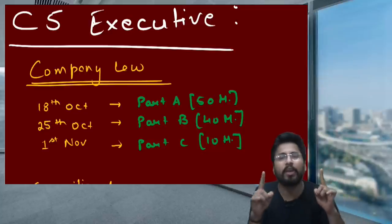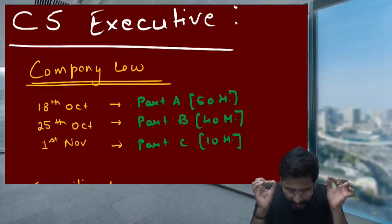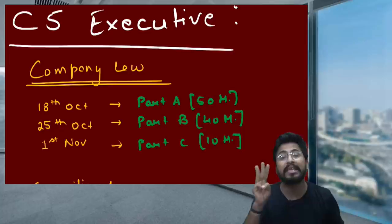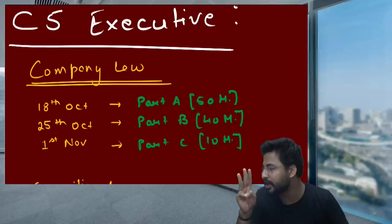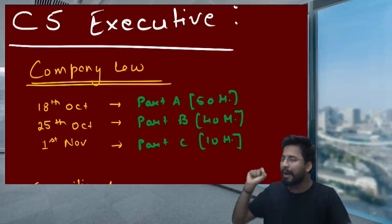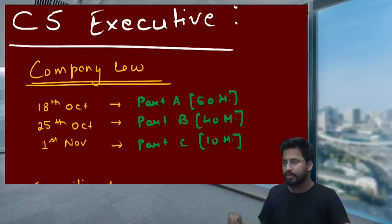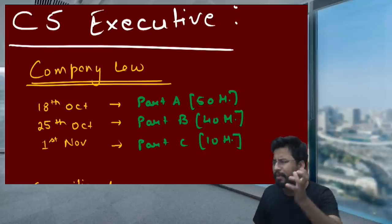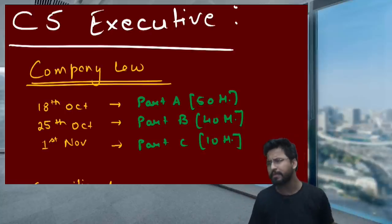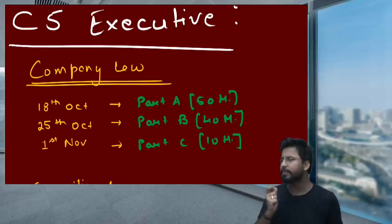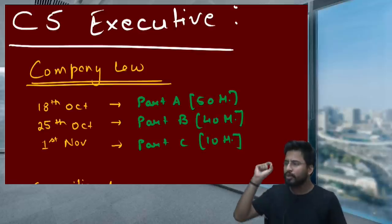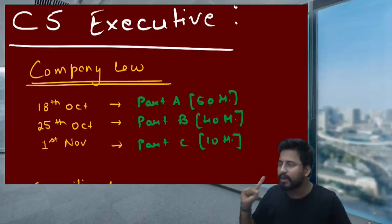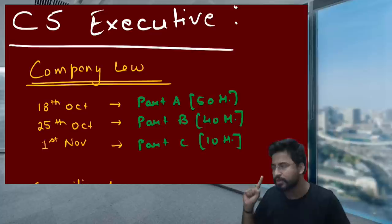For CS Executive, Company Law revision lectures will be on three dates: 18th October, 25th October, and 1st November. 18th October will be Part A revision, 25th October will be Part B, and 1st November will be Part C. Part C is a small part, but the CS Act in it troubles some students, so 1st November is dedicated to Part C revision.